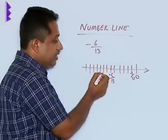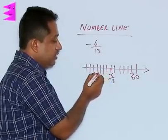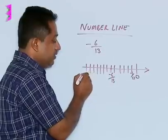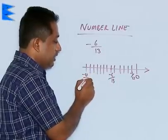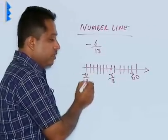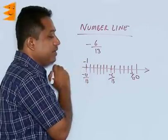So, here we have minus 7 by 13, minus 8 by 13, similarly 9, 10, 11, 12 and this is going to be minus 13 upon 13, and minus 13 upon 13 is going to give you the value of minus 1.